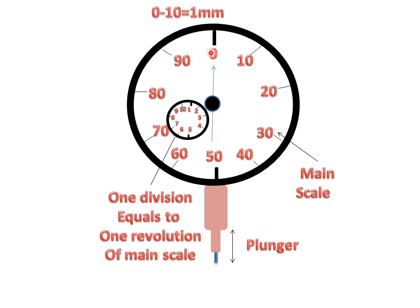This reading 0 to 10 for the main scale is 1 mm. The complete reading 0 to 10 is equal to 1 mm. And the least count of the main scale is 0.01 mm. This means 0.01 mm is the smallest reading we can note from the dial gauge indicator.